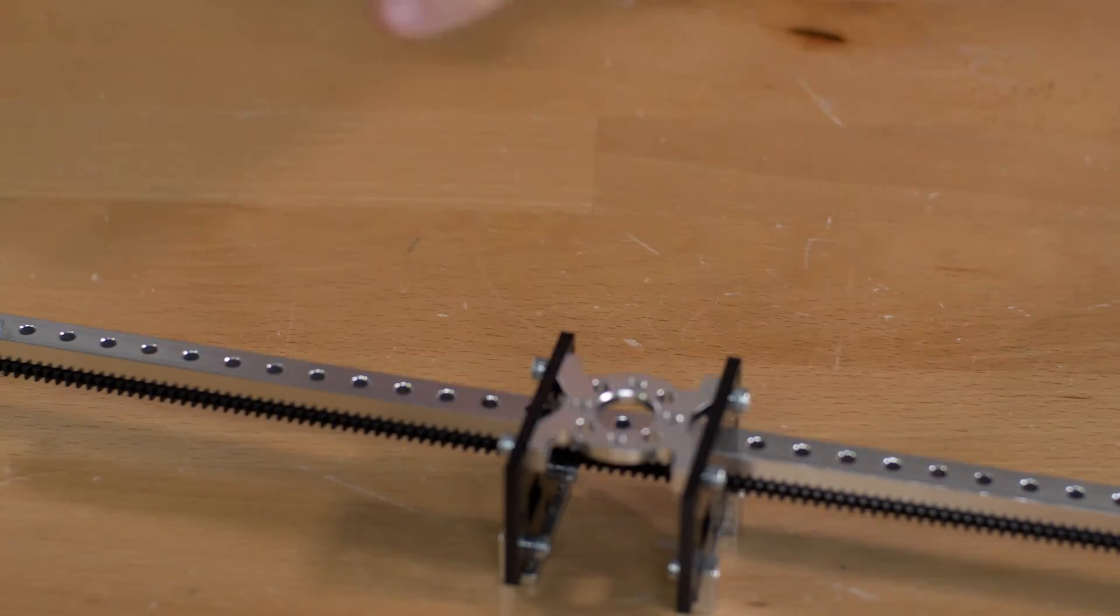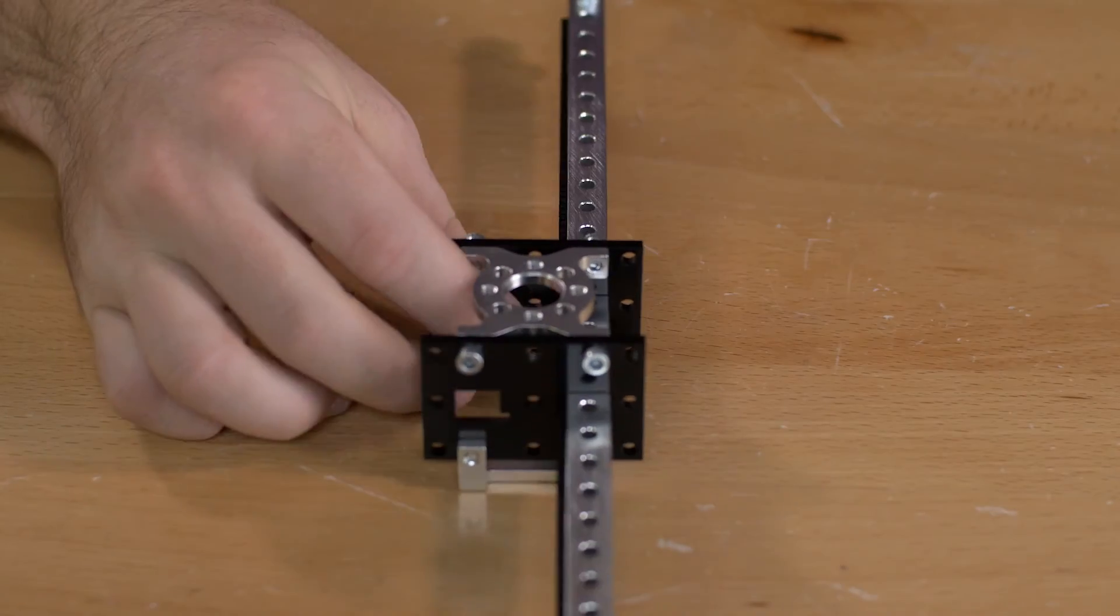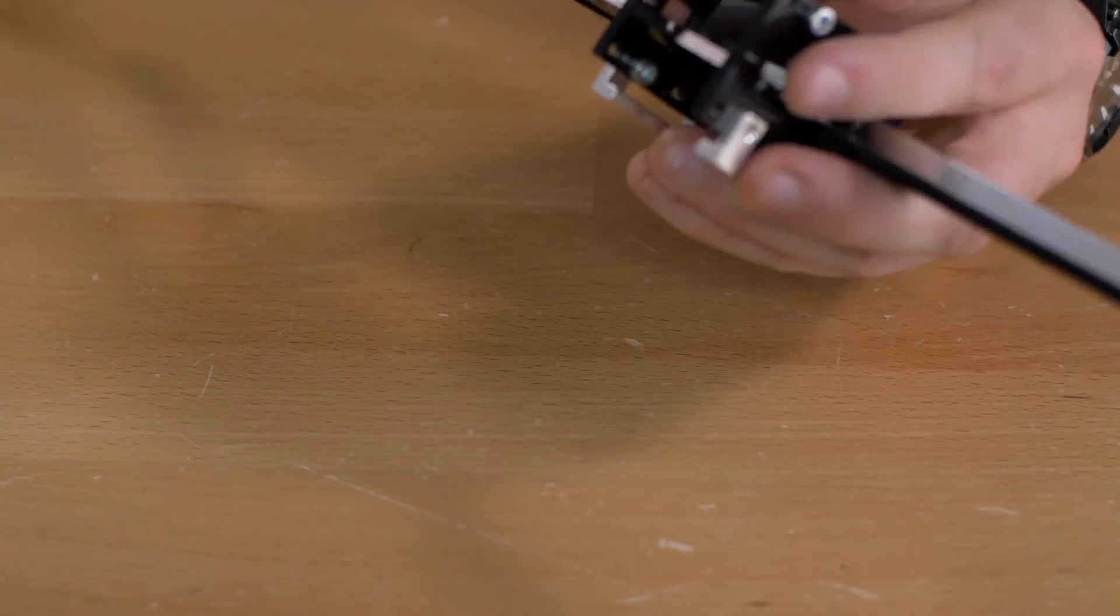Now once you have that together you're going to do the exact same thing for the other set of holes that it has. Again make sure that you have the teeth on your gear rack facing towards the inside.